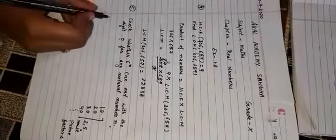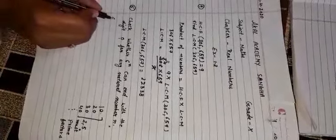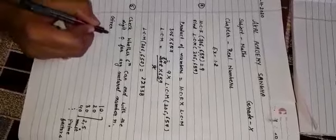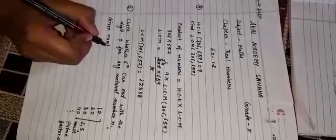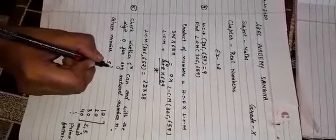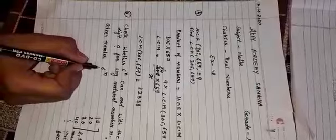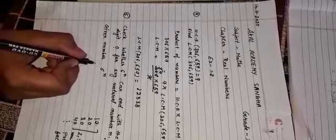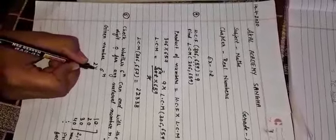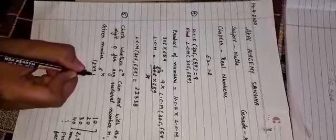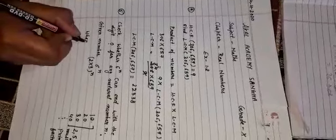Now, we have to take the given number 6 power n. We will write this 6 in the form of prime factors: 2 multiply 3 power n, where n is a natural number.